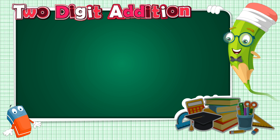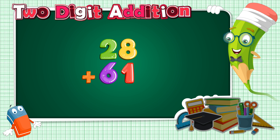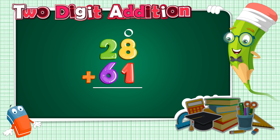Let's do a simple addition without carry: 28 plus 61. 8 and 1 are in the 1's place, so place O, which stands for 1's, above the 1's column. 2 and 6 are in the 10's place, so place T, which stands for 10's, above the 10's column.